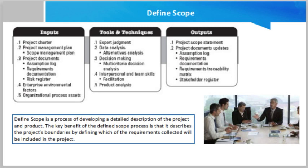The important components of the project scope statement include: product scope description, a method used to elaborate on the characteristics of the product defined in the project charter and requirement documentation; acceptance criteria, a set of conditions required to be met before final deliverables are accepted by stakeholders; deliverable, any unique and verifiable product required to be produced to complete a process, phase, or project; and project exclusions, a method to exclude certain products from the scope to help the project manager manage stakeholder expectations.